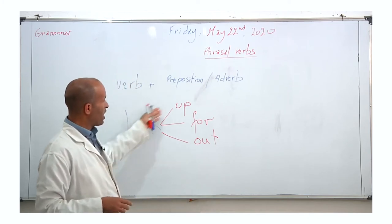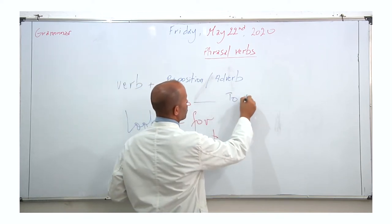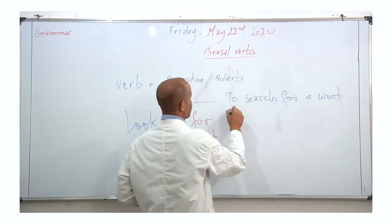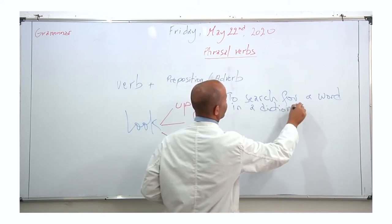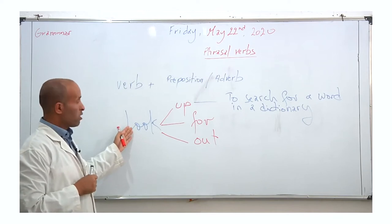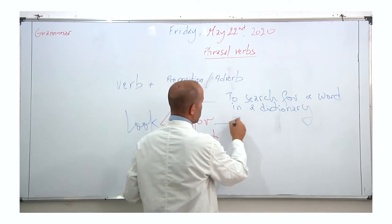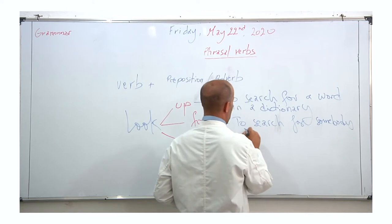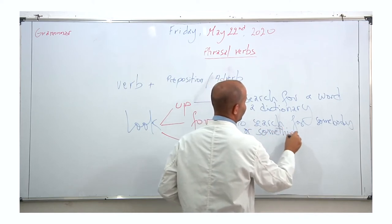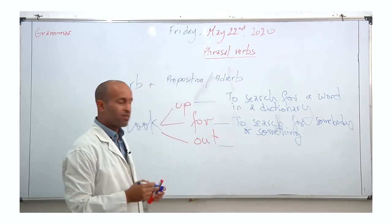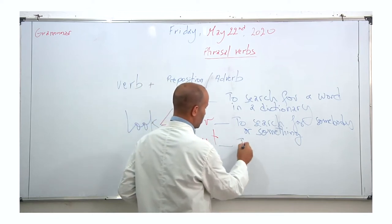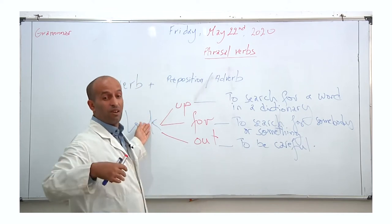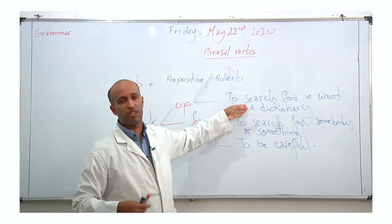For example, 'look up' means to search for a word in a dictionary. 'Look for' means to search for somebody or something. 'Look out' has a different meaning — it means to be careful. If you don't understand a word, you look it up in a dictionary in order to understand its meaning.